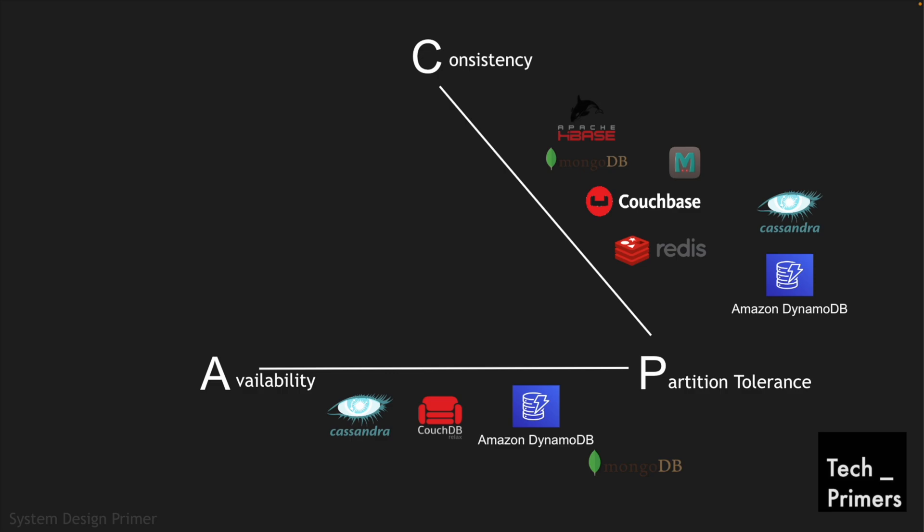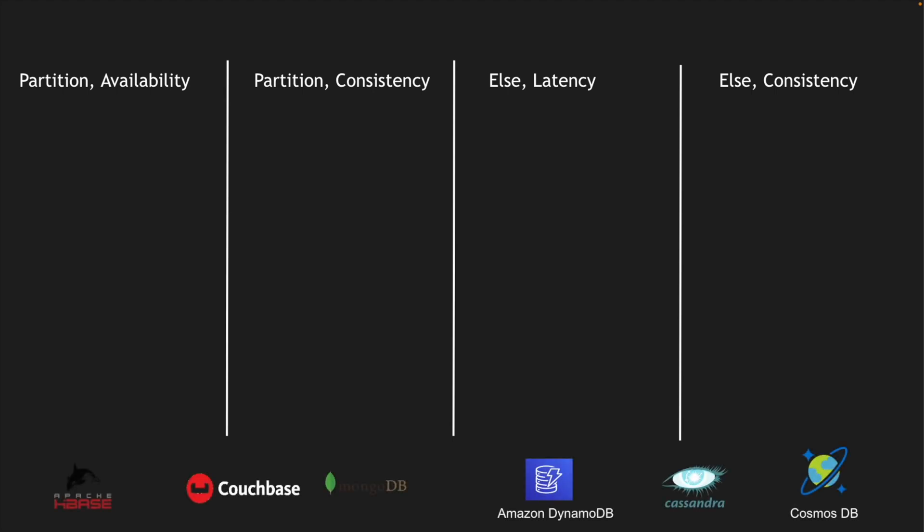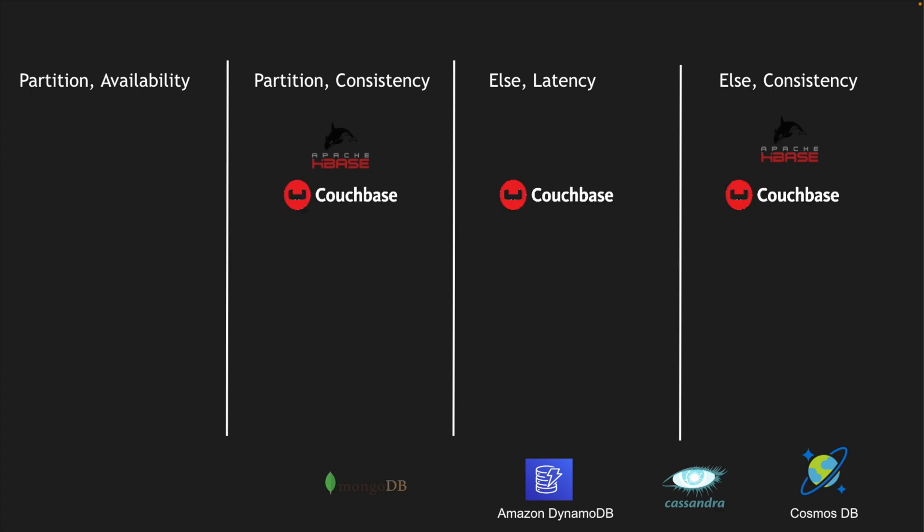Now let's overlay databases into four different PACELC categories. Apache HBase is a highly consistent database — whether there is a partition or not, it chooses consistency as a first-class citizen. CouchBase can be tuned into three different categories, similar to Amazon DynamoDB: it caters to consistency when there is partition tolerance, and to latency when there is no partition, but can also be tuned to consistent behavior with no partition.